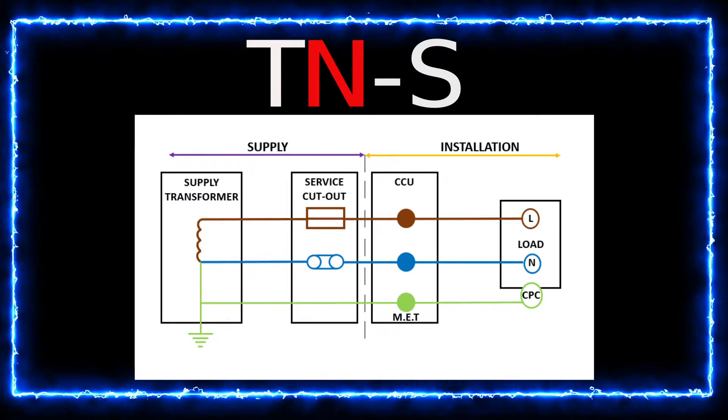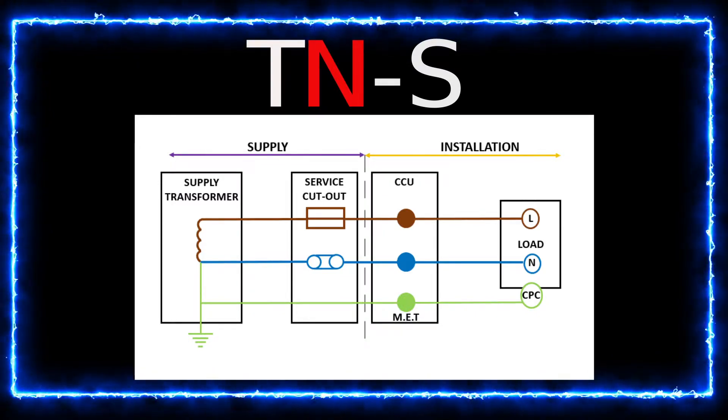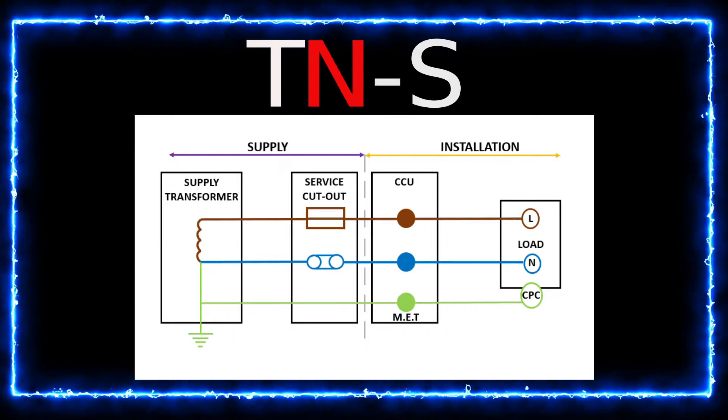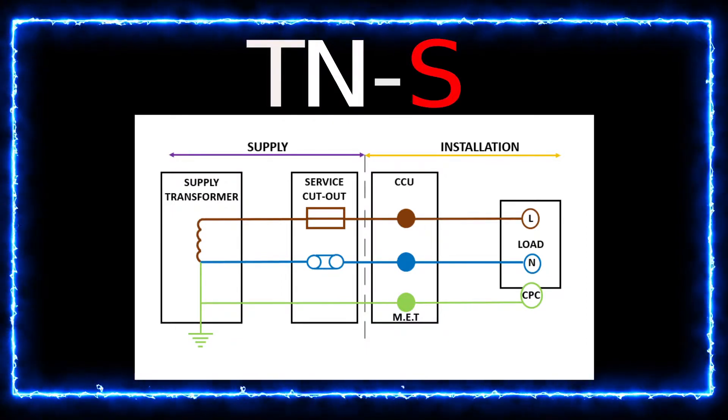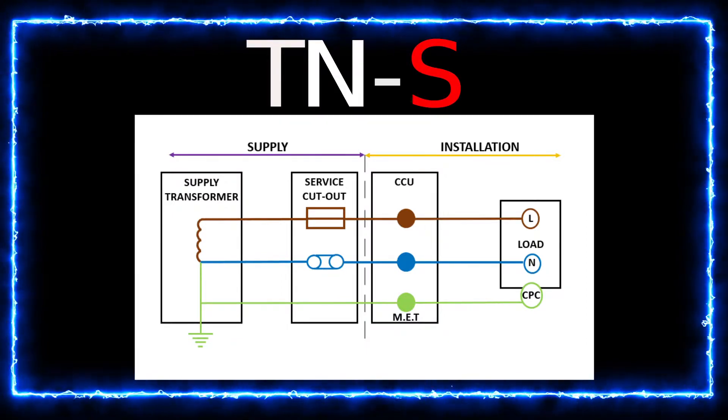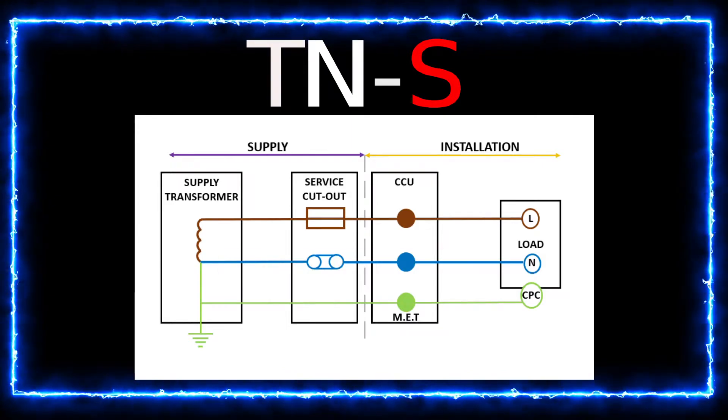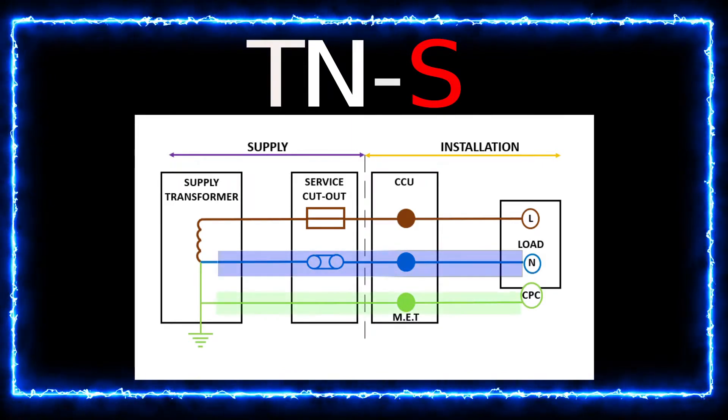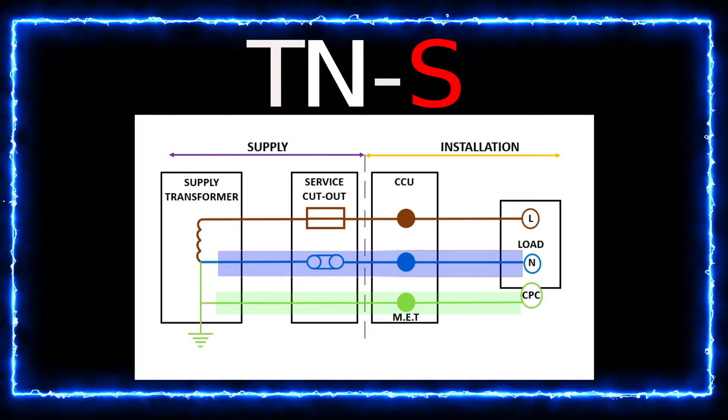The S is there to show the relationship between the neutral and earth conductor. S stands for separate. So this shows that in this earthing arrangement, the neutral and earth conductor and CPCs are all separate.